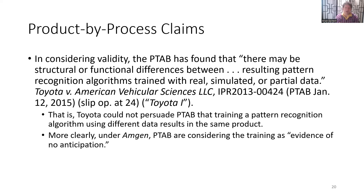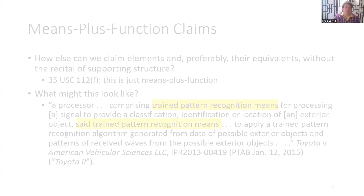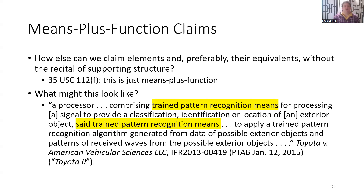Why isn't anyone talking about this? That case is nine years old. AI was not a hot topic nine years ago — we were discussing Teva claim construction and In re Cuozzo in inter partes reviews back then. Only now are we paying attention to this issue. How else can we claim elements and preferably their equivalents without the recital of supporting structure? That's just means-plus-function language under 35 U.S.C. § 112(f). A claim might read: 'trained pattern recognition means' for processing the signal and applying the trained pattern recognition algorithm.